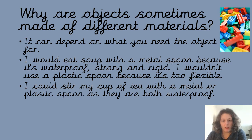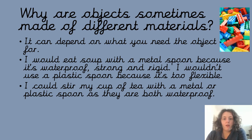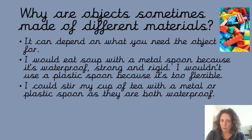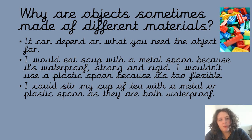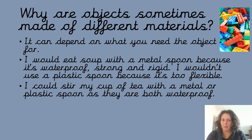I would use a metal spoon to eat soup because it's waterproof — soup's a bit wet — it's strong, it's not going to flop about, and it's rigid, meaning it's not flexible. I wouldn't use a plastic spoon for soup because it can be a bit flexible and becomes more flexible with the heat of the soup. If I was going to make a cup of tea and stir it, I would use a metal or plastic spoon because they're both waterproof. I wouldn't want a paper spoon — that would be dreadful.